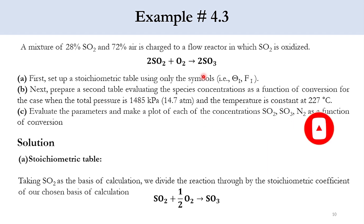In the previous lecture on stoichiometry, we prepared the stoichiometry table and derived the concentration term for both batch and flow systems. In flow systems, we derived a couple of relations — one for the liquid phase system and one for the gas phase system. Today we will solve an example: a mixture of 28% SO2 and 72% air is charged to a flow reactor in which SO2 is oxidized. 2 moles of SO2 react with 1 mole of oxygen to produce 2 moles of sulfur trioxide (SO3).